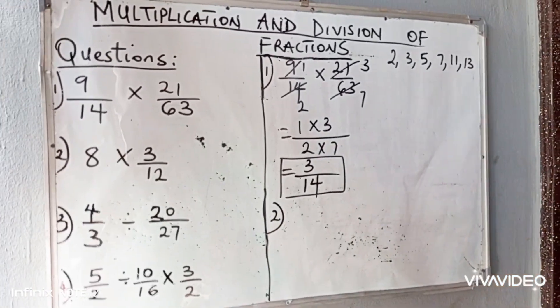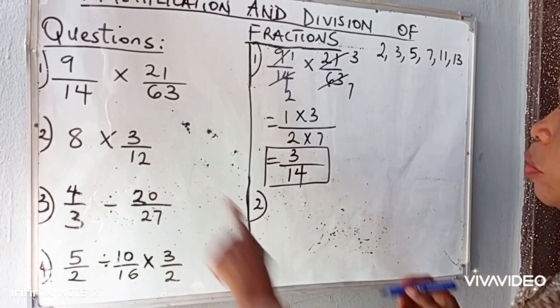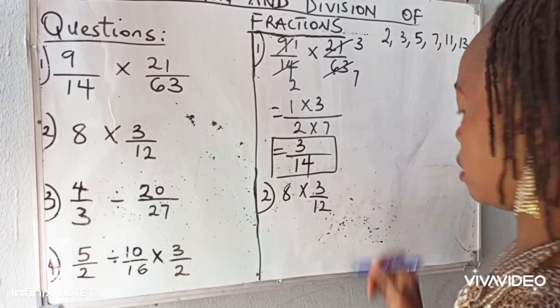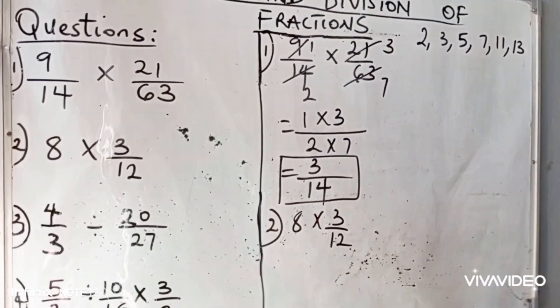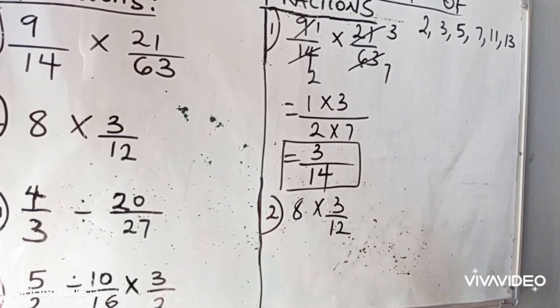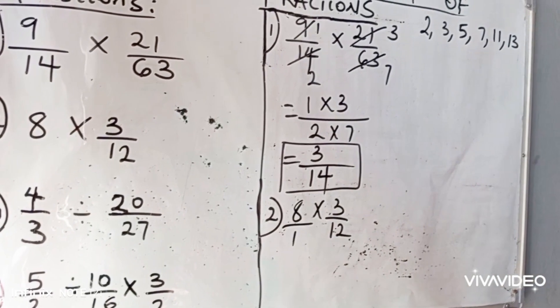Question number 2. 8 multiplied by 3 over 12. Every whole number has 1 as the denominator. So if you want to change 8 to a fraction, we'll write 8 over 1.